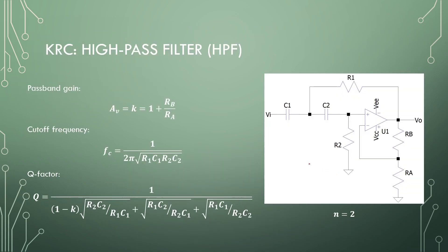In the high pass KRC filter, the resistors and capacitors just switch positions from the low pass filter. C1, C2, R1, and R2 are responsible for the frequency, and Ra and Rb are responsible for the Q factor. The pass band gain is also dependent on Rb and Ra, and the Q factor is dependent on all the components.